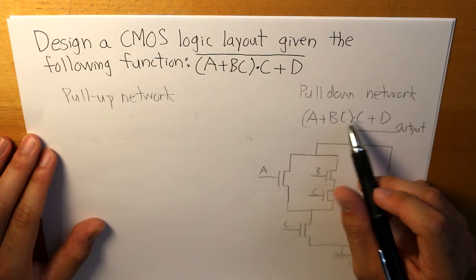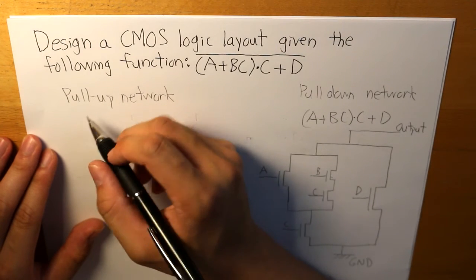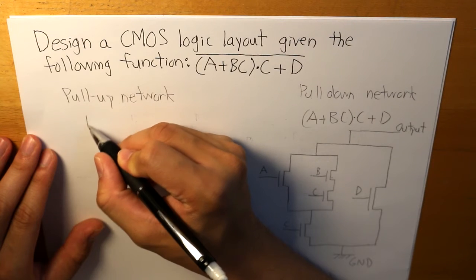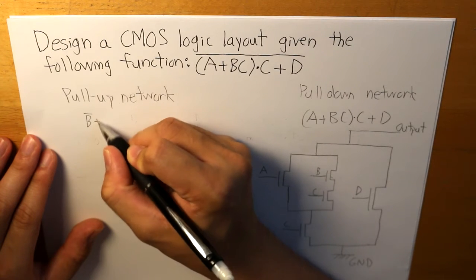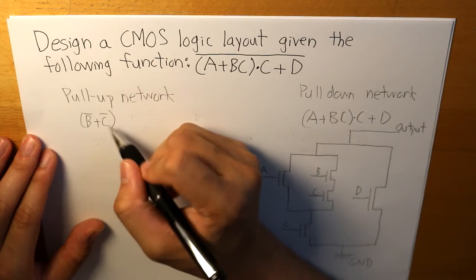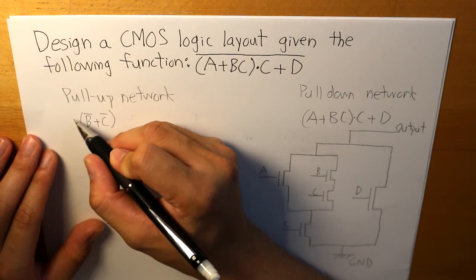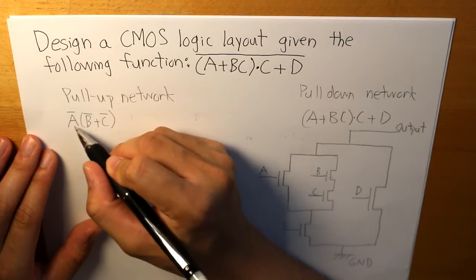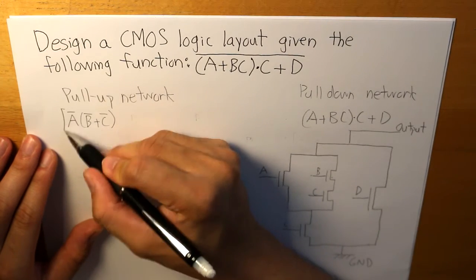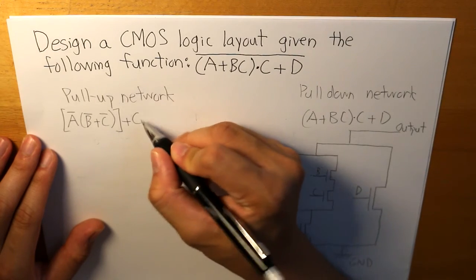So let's start off with these two inputs, B and C. So the inversion of that would basically be B in parallel with C. And these two terms are going to be in series with A.